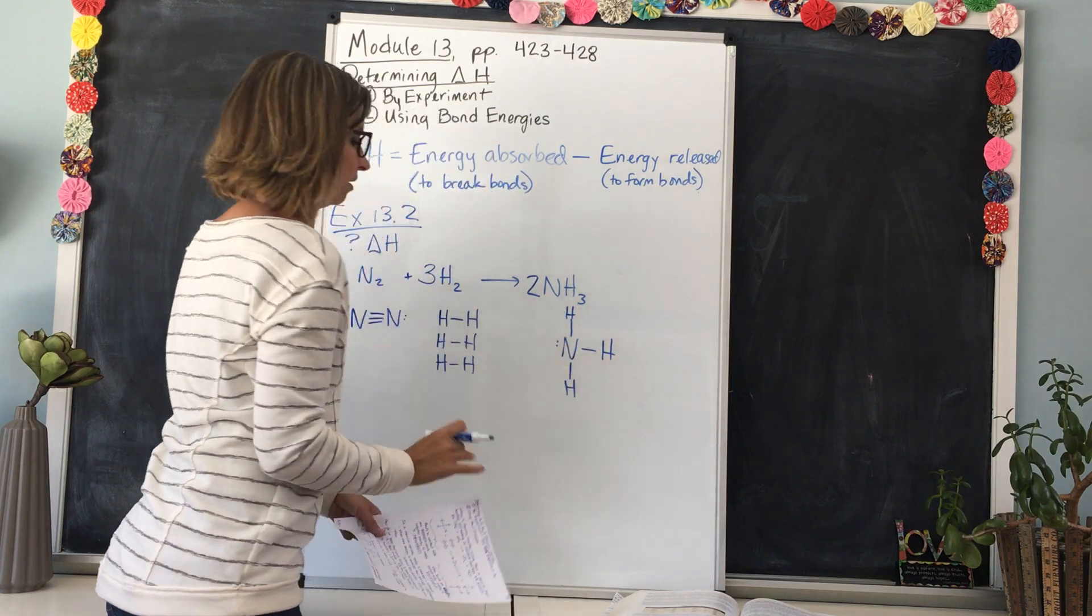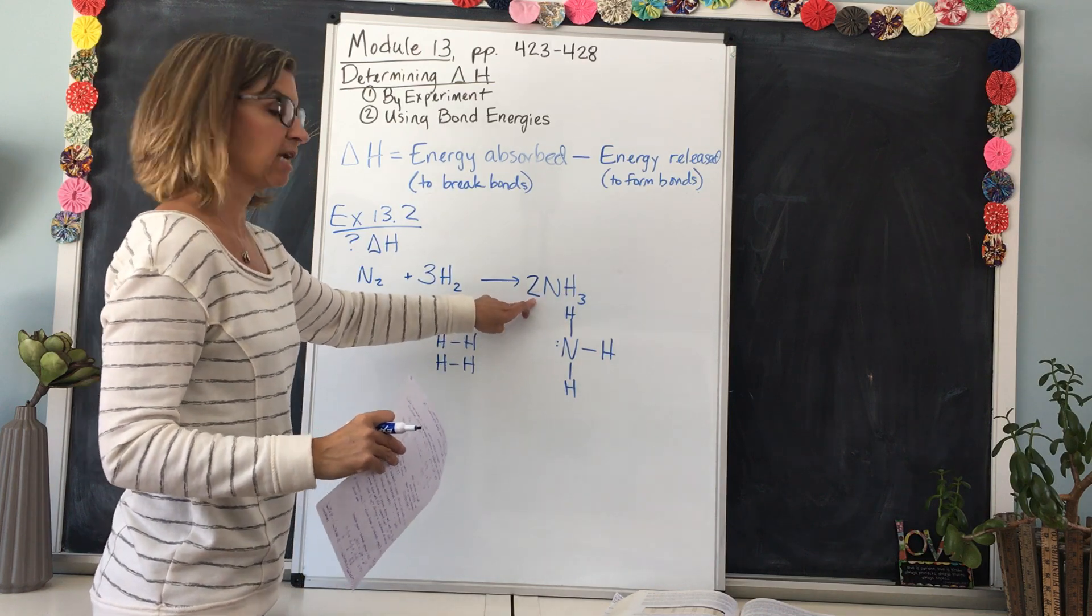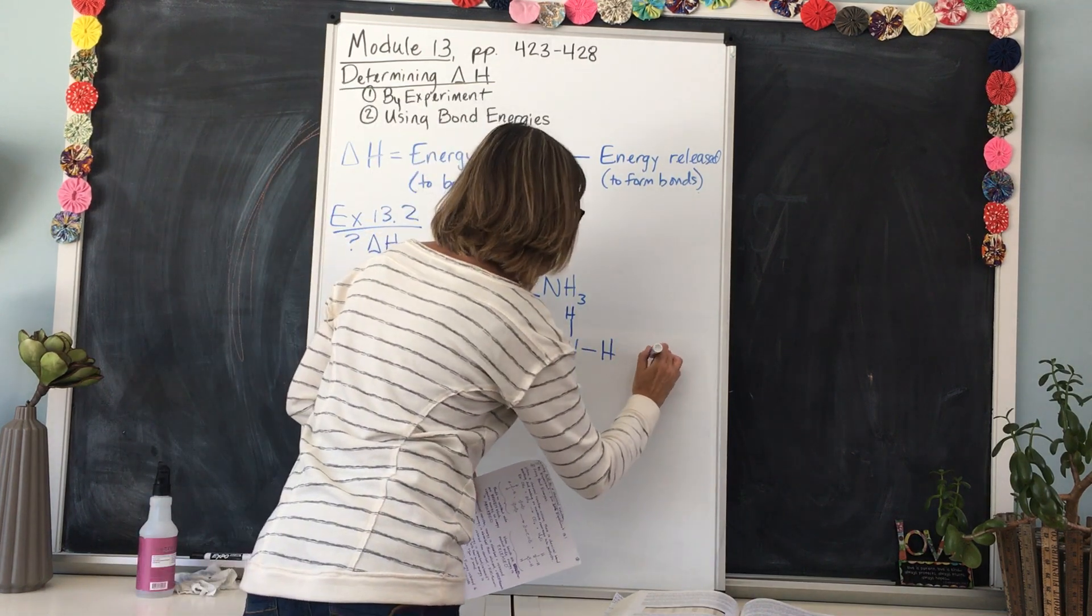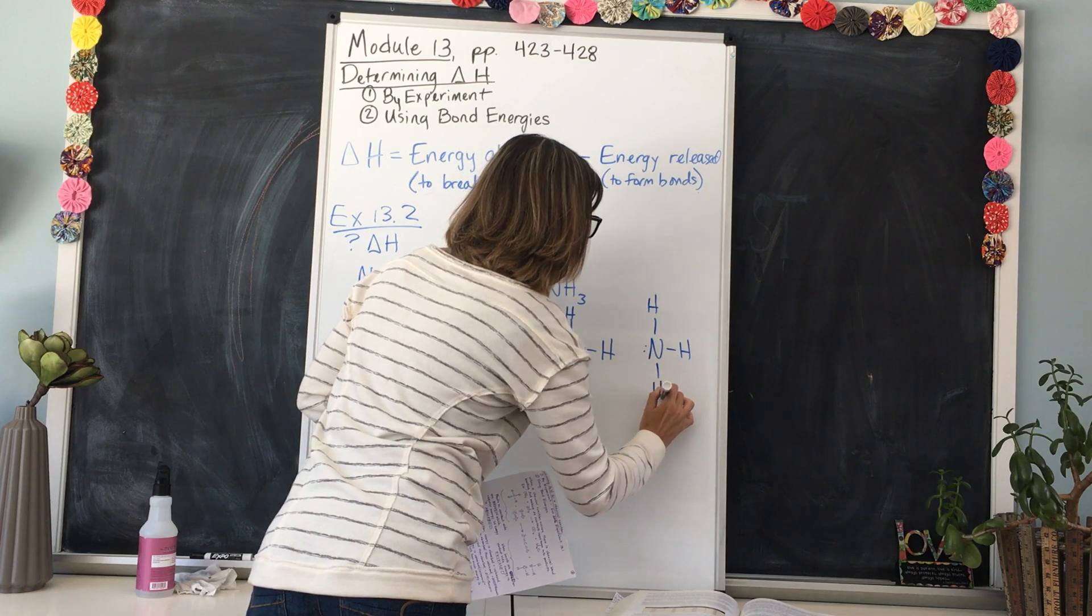And now ammonia. Nitrogen would be in the center and it would have three H's coming off of it and a lone pair. But there's not just one ammonia molecule. Remember that coefficient out front tells us there are two, so let's make another one: N H H H H.